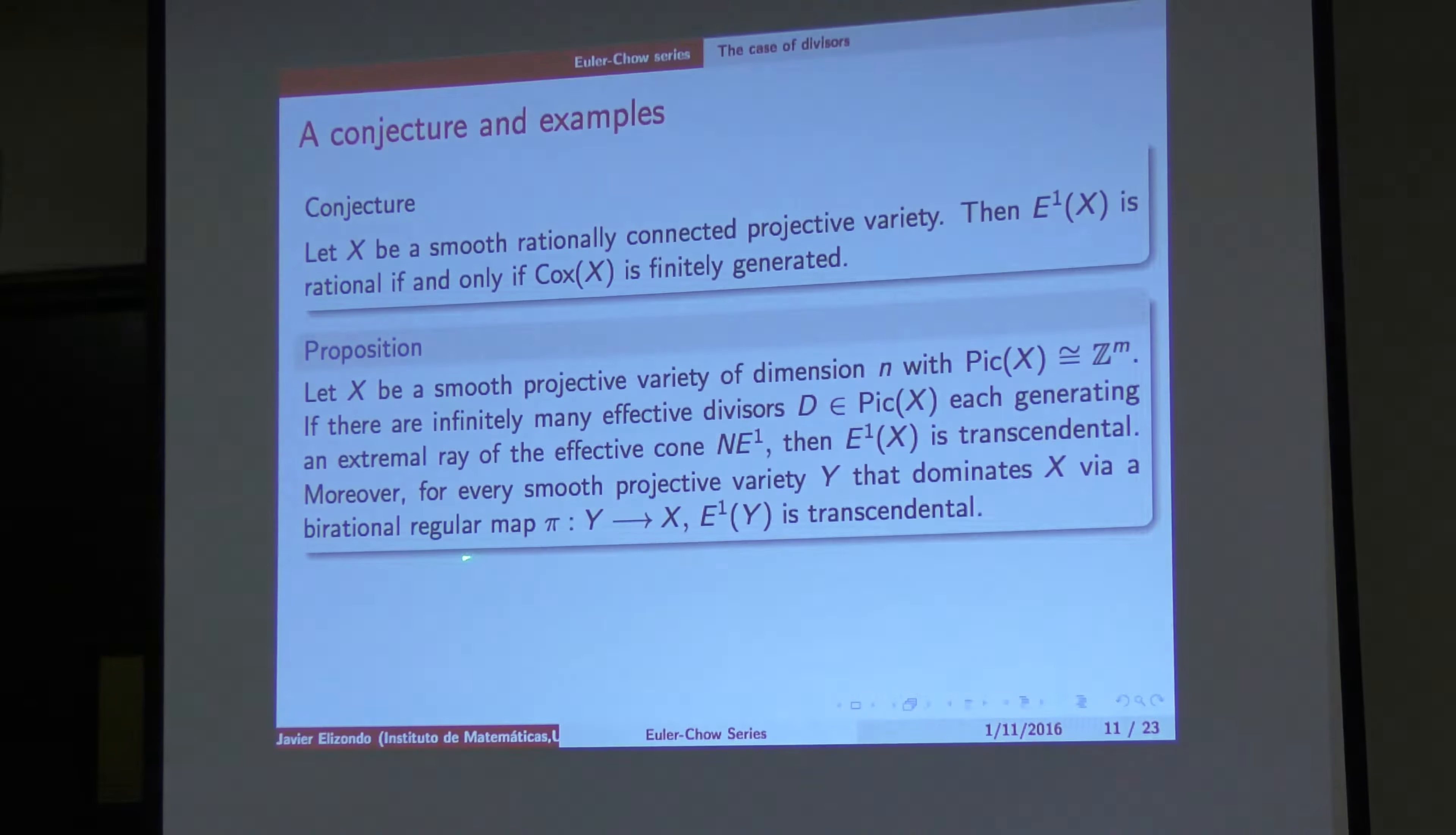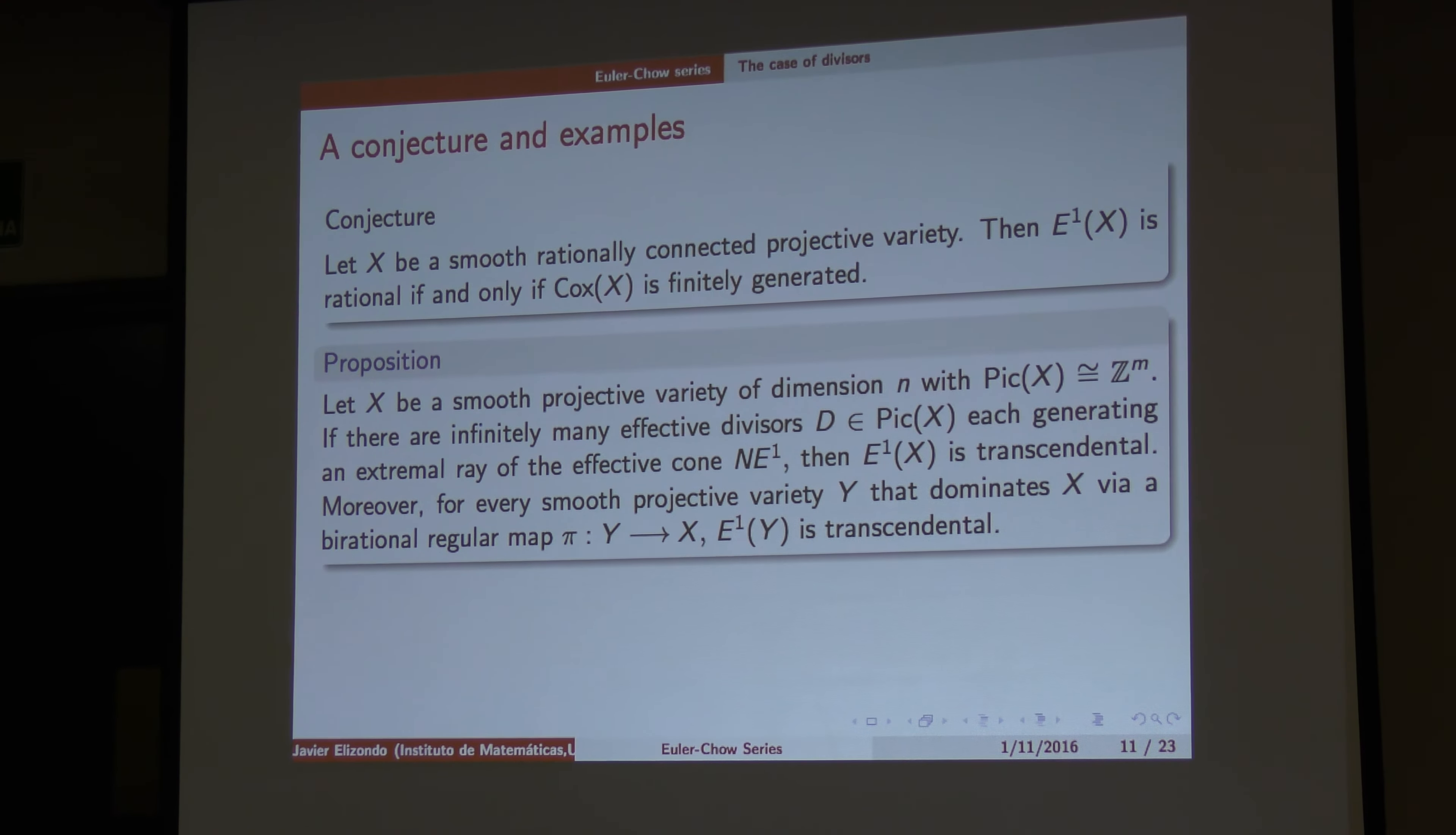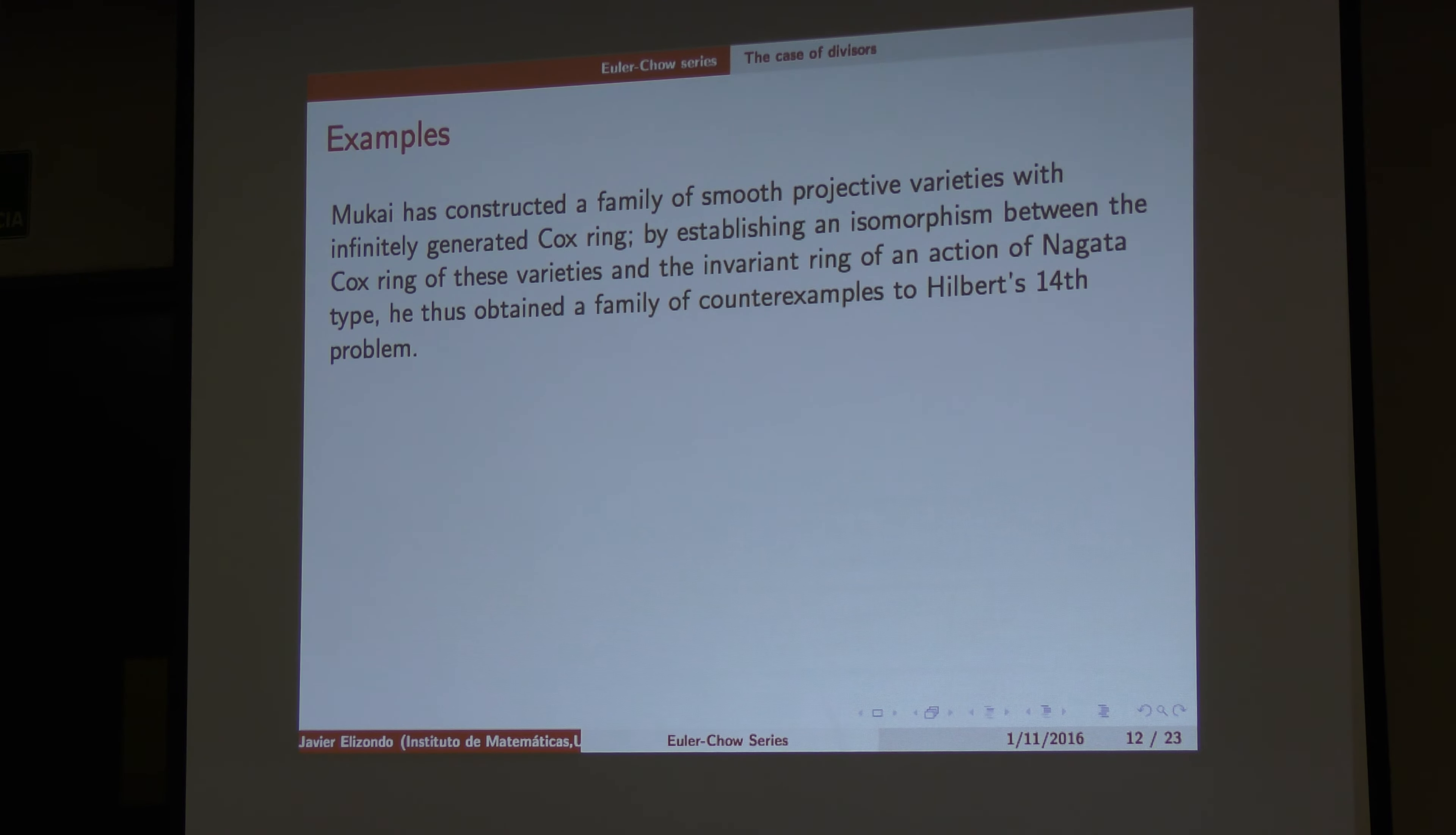For instance, we predicted the variety Y that dominates X via rational and regular maps. This is transcendent. So, it's related in some way with bi-rationality. So, the example that we have, where the series is not rational, and is very bad-behaved, is the example that Mukai constructs, trying to find out a counterexample to the Fourteenth Problem.